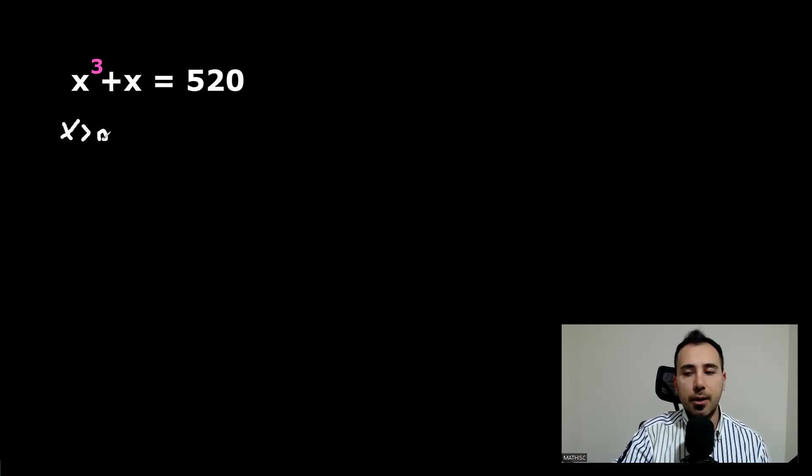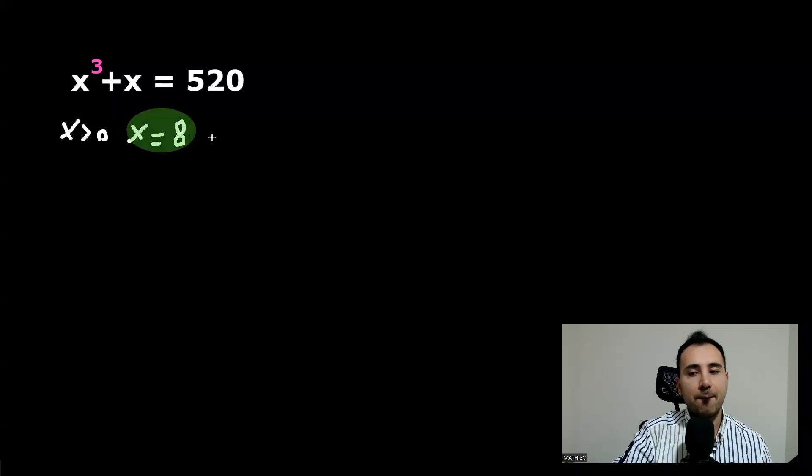Now let's just try our luck. We define x or at least arrange for the value of x. If x is seven, this will be 350. If x is eight, 512 plus eight is 520. So this is actually the solution to the question. Does that mean the equation and the solution is over? No, because there might be two more solutions that we don't know.